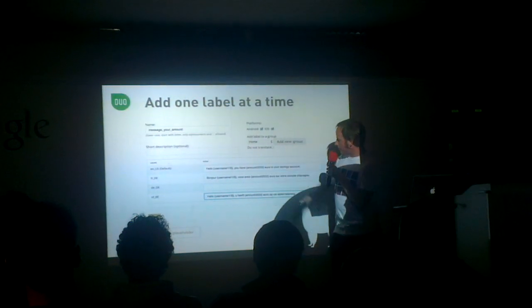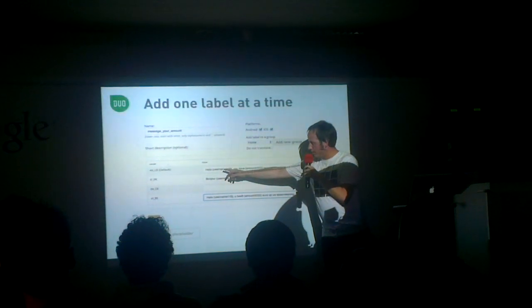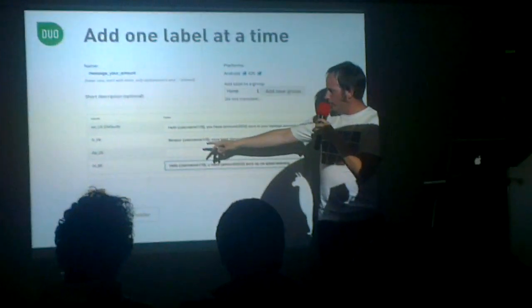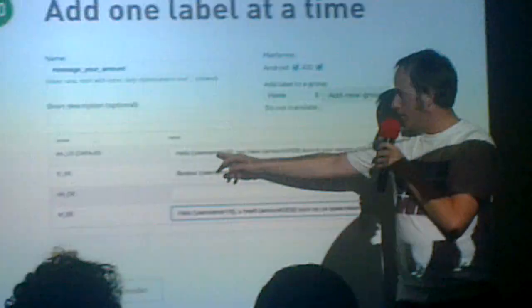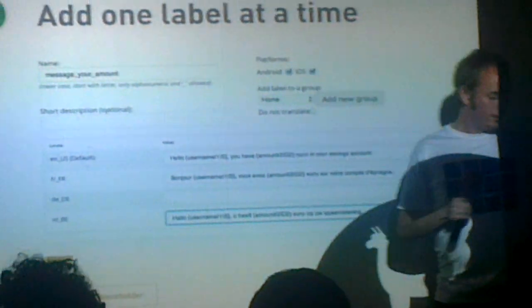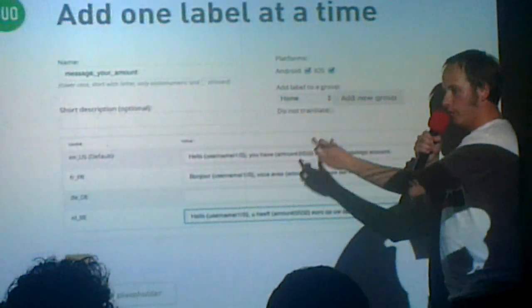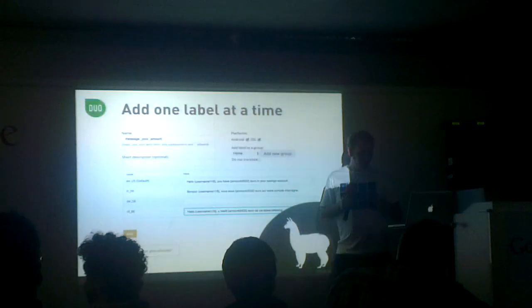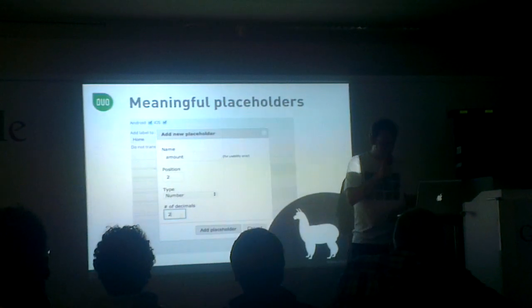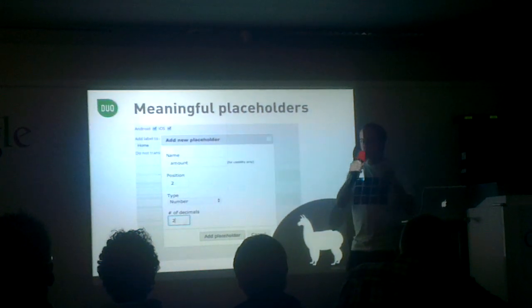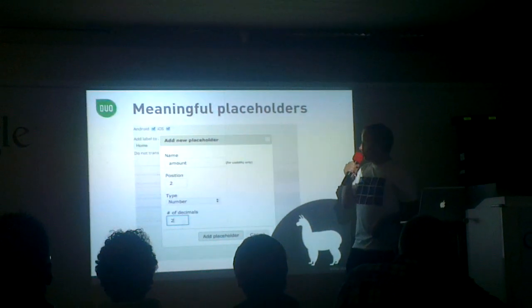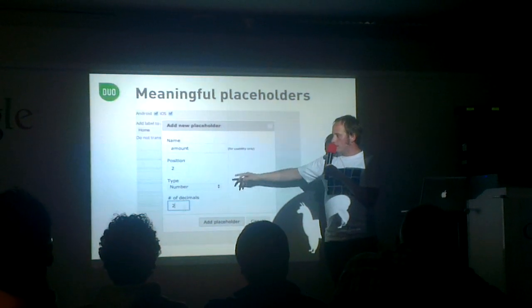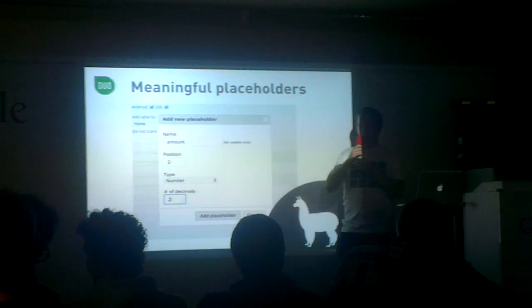When you look at the labels, you see something between brackets — we use this for placeholders. If you read it correctly, it says 'username' with a couple of signs around it, so translators know that's where the username will be placed, or the amount, and so on. This way we have meaningful placeholders so translators know what they're all about. Just add a name for usability, where you're going to position it, the type, and perhaps if it's a number, add some decimals to it.